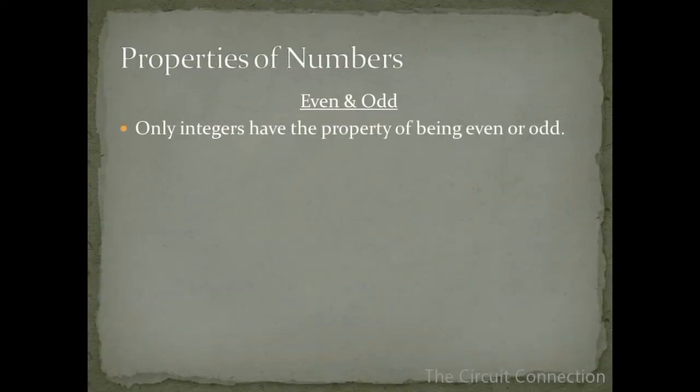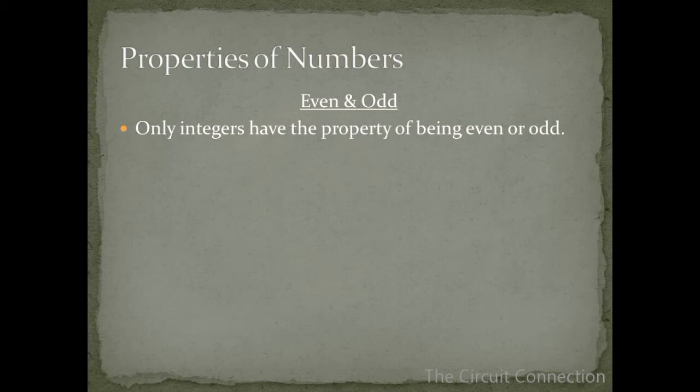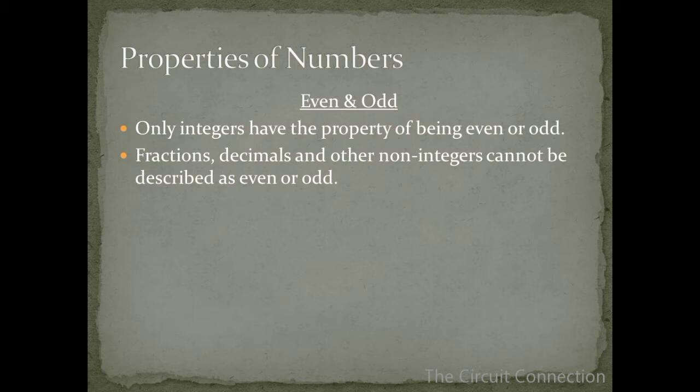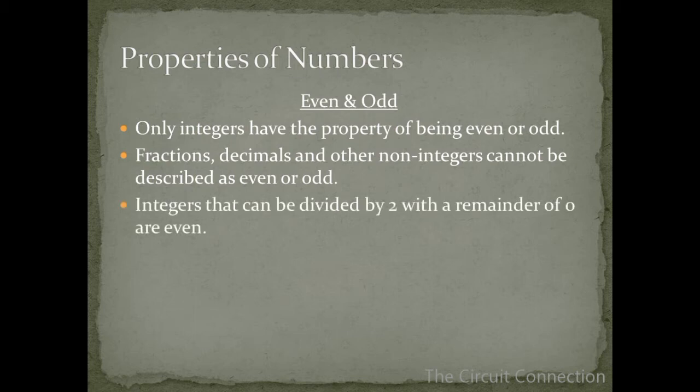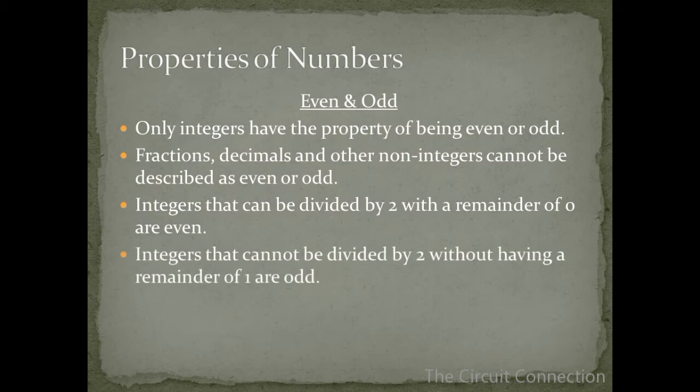Even and odd. Only integers have the property of being even or odd. Fractions, decimals, and other non-integers cannot be described as even or odd. Integers that can be divided by 2 with a remainder of 0 are even. Integers that cannot be divided by 2 without having a remainder of 1 are odd.